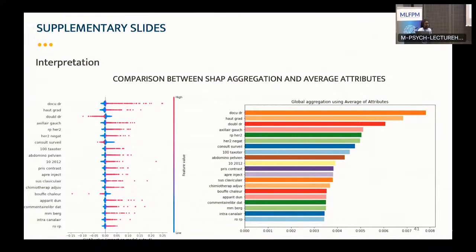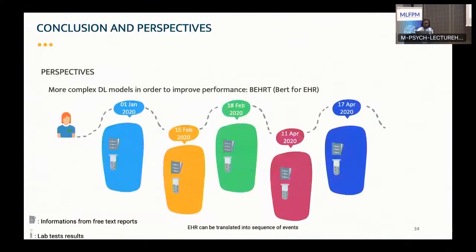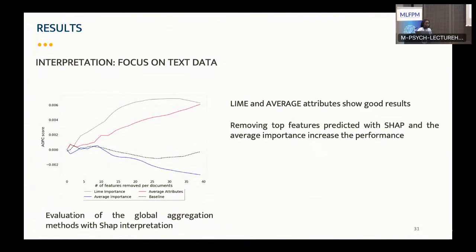Another question suggested that when computing the AOPC perturbation curve, it might be interesting to recompute relevance for the new model after removing a feature. The concern is that random forest may focus on one top feature and then shift to a highly correlated one after removal, since random forest is not ideal for fair attribution of relevances. SHAP with perturbational methods may better distribute relevances across correlated features.